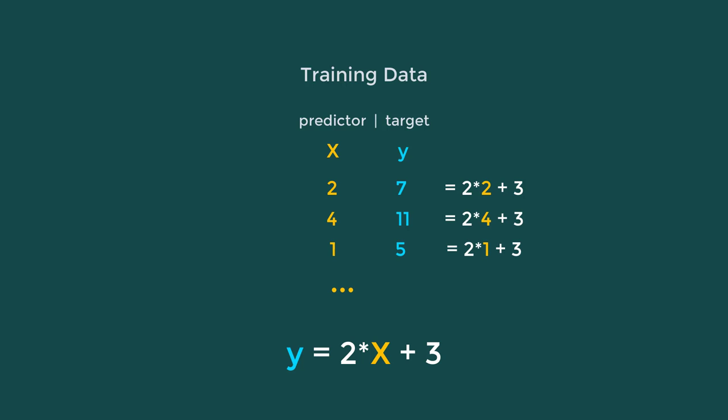It only means that whatever the value of x, just double it and add 3 to get the value of y. So now, if we supply a new value to x that it hasn't encountered before during training — let's say 3 — it should be able to predict an accurate estimate of 9 based on its training. Now let's have a more realistic example where we can apply linear regression to build our first machine learning model.